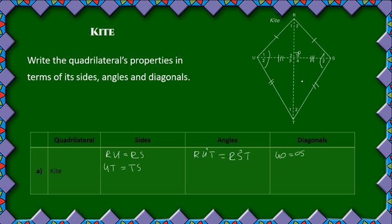Also, the diagonals are perpendicular to each other, meaning RT is perpendicular to US. And then also the diagonals bisect the angles — that means they cut the corner angles in half.